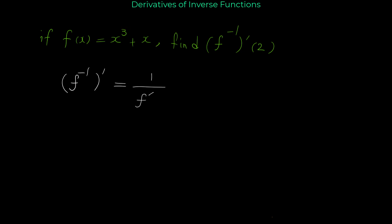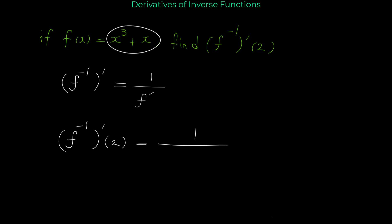It's very simple to find the derivative of the inverse of a function. In this example, for finding the derivative of f inverse, if we use this formula: derivative of f inverse at 2 equals 1 over the derivative of the original function. The derivative of x to the 3 plus x is 3x squared plus 1.